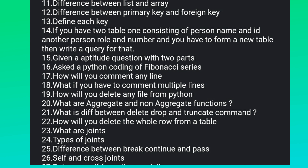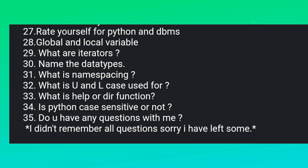What is cross join, types of joins, difference between break, continue, and pass, self and cross join. See — the number of questions just keeps going. Rate yourself for Python and DBMS, global and local variable, what is an iterator, name the data types, what is namespacing, why are uppercase and lowercase used, what are the help and dir functions, and is Python case sensitive or not? Do you have any questions?